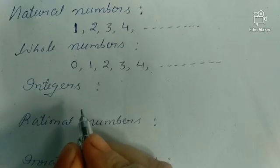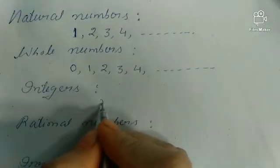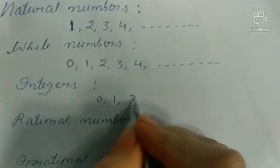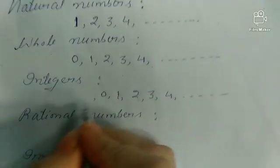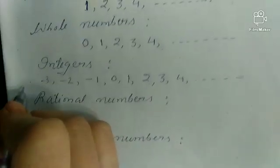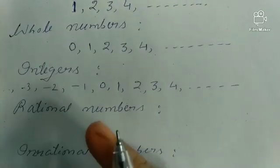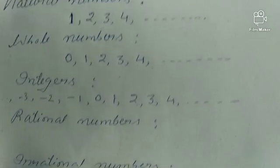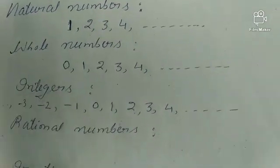Now let us come to integers. So what does integers mean? Integers means the whole numbers along with the negative numbers. The whole numbers along with the negative numbers will constitute the integers. So we are now clear about natural numbers, whole numbers, and integers.